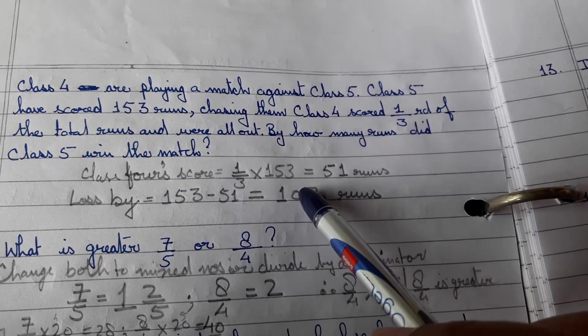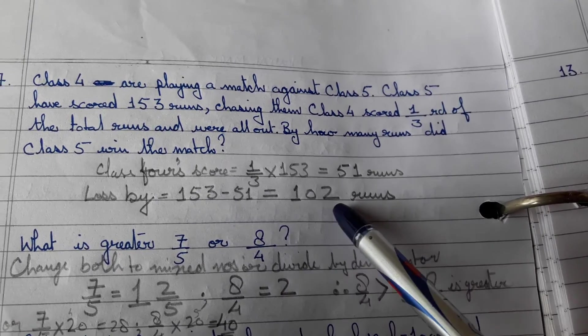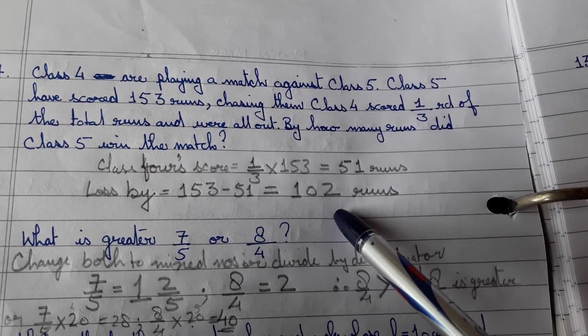So first find out 1 third of the total score, 51 runs. Subtract those 51 from the total score. So that is by 102 runs, class 4 have lost the match to class 5.